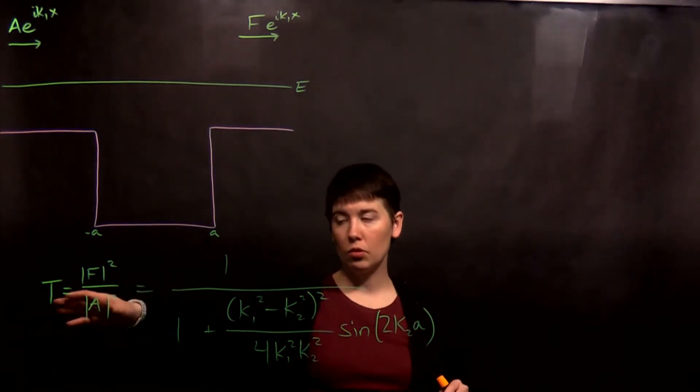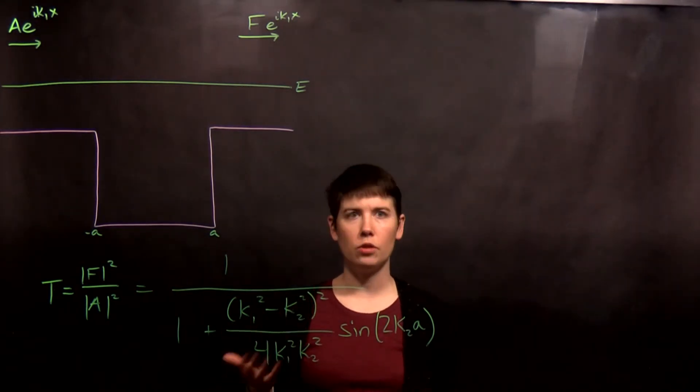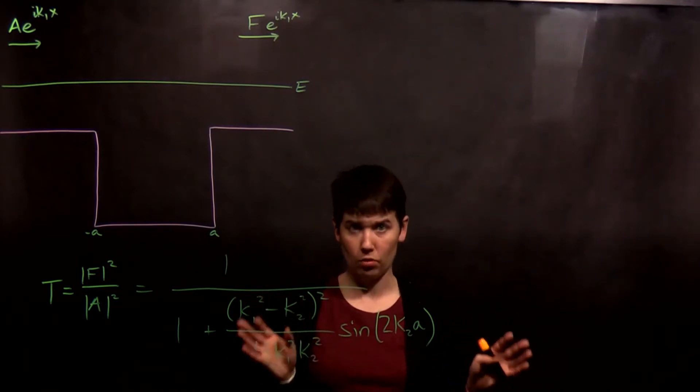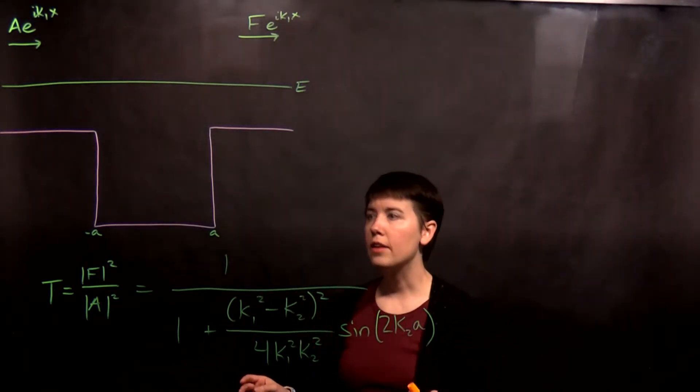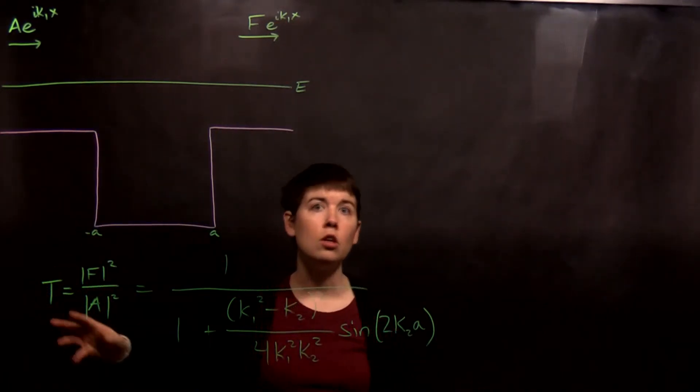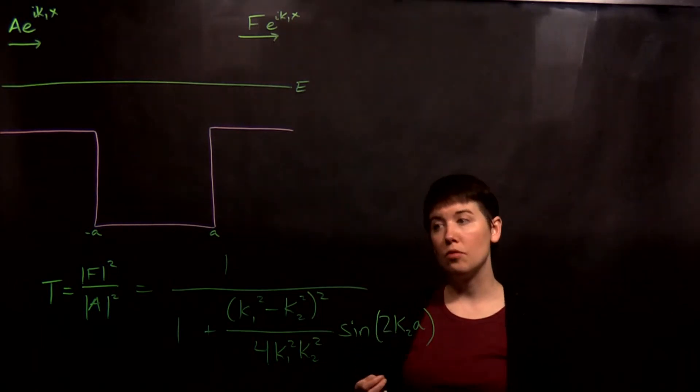So you're given this equation for the transmission coefficient, and there's also a reflection coefficient. When you add them together they equal one, because your wave has to be transmitted or reflected, those are the options. It's written this way, where f is representing that coefficient, and a is your incoming coefficient. This is a way of getting away from the fact that we can't really normalize it fully.